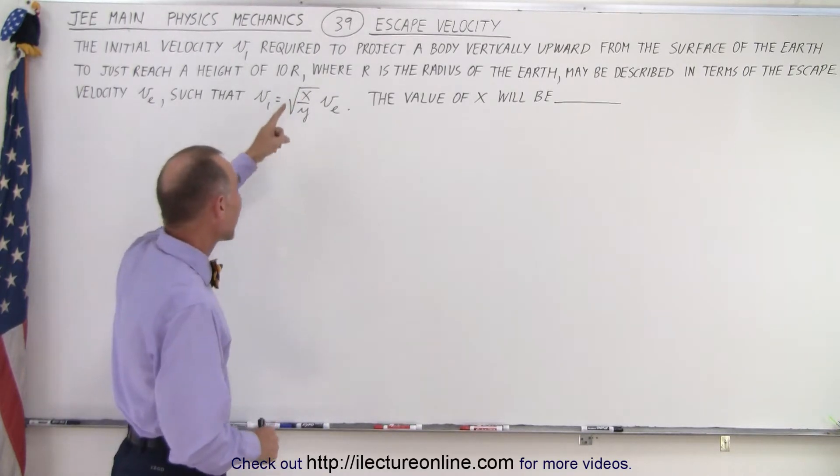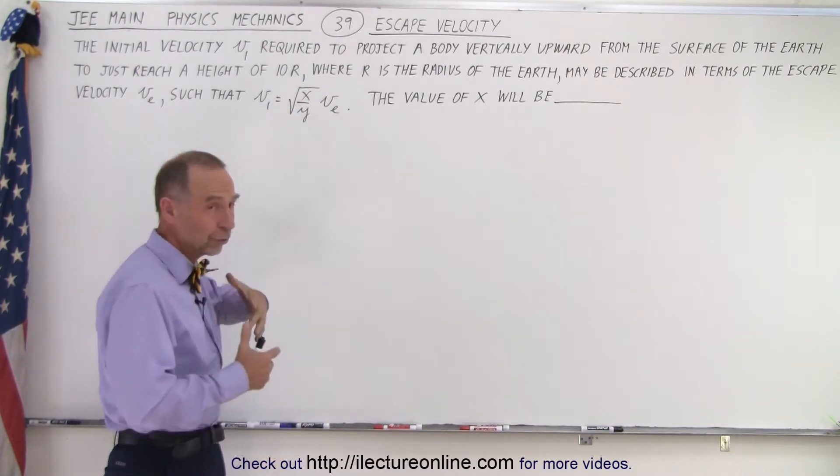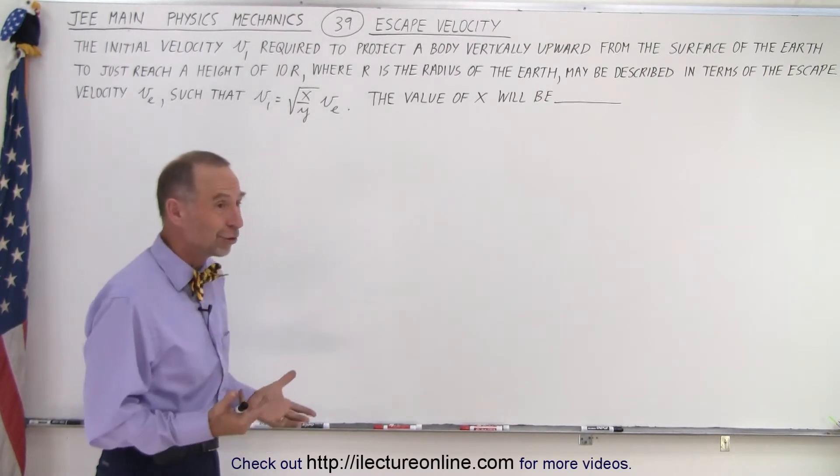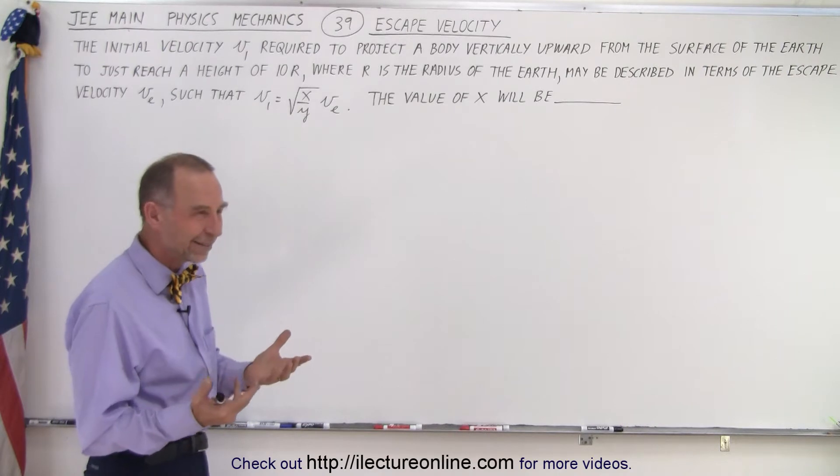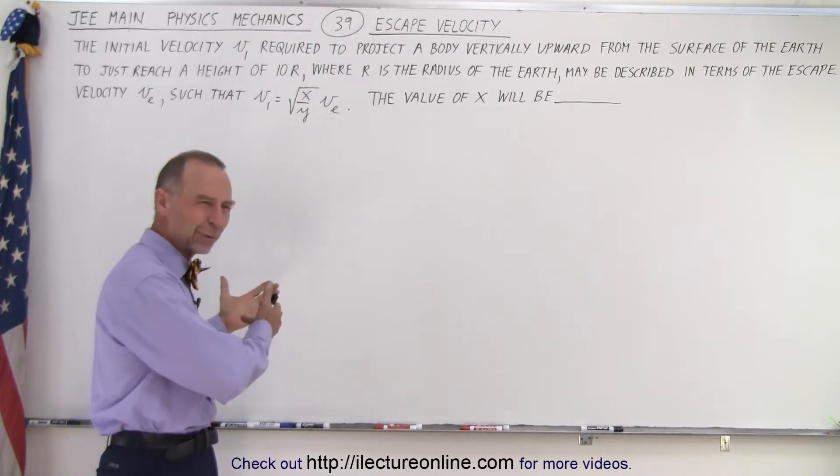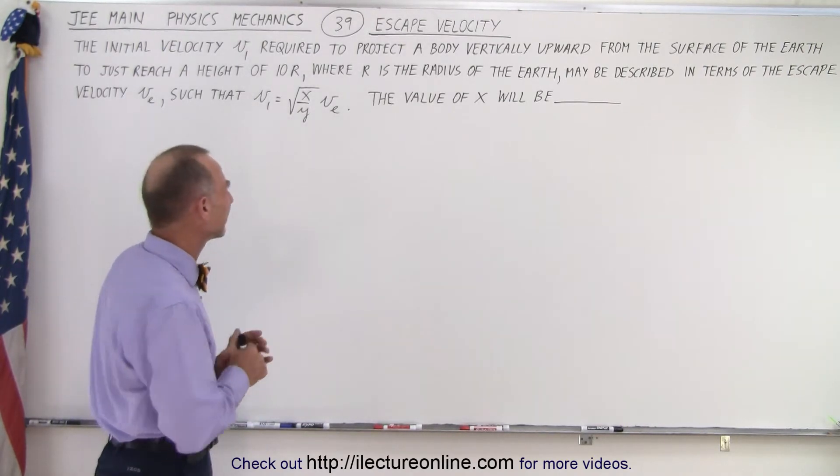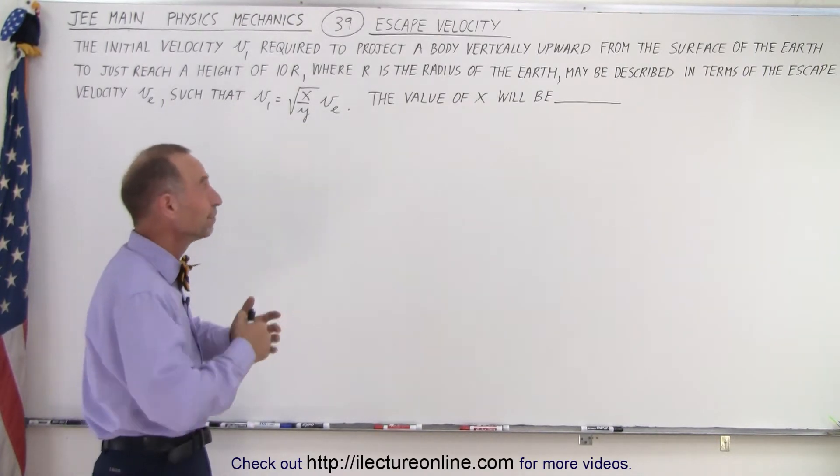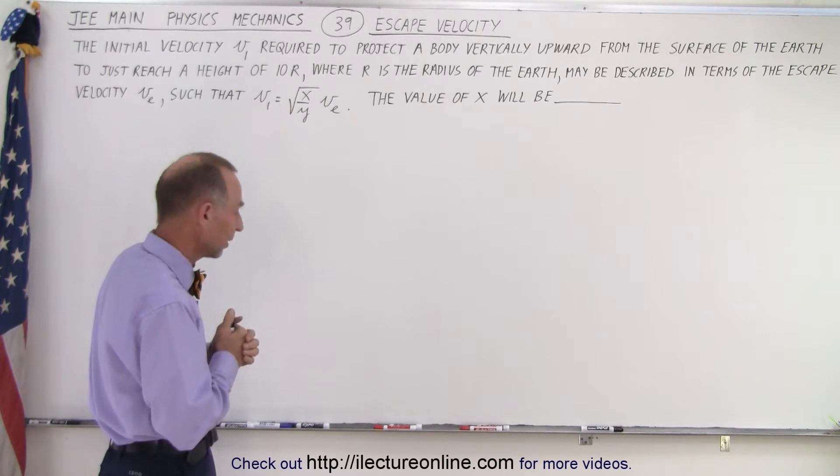The problem of course is that we have x over y and they don't tell us what the y value is, so you could have a different ratio still be correct and yet you'll get the wrong answer. It's kind of strange that they're asking for x not x over y. Oh well, that's the way it is so let's see what we can do with it.